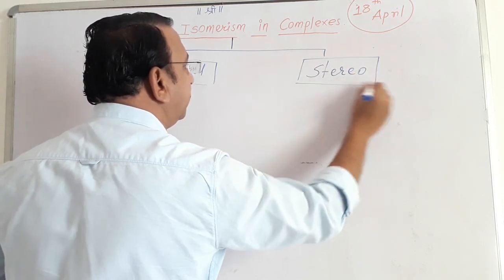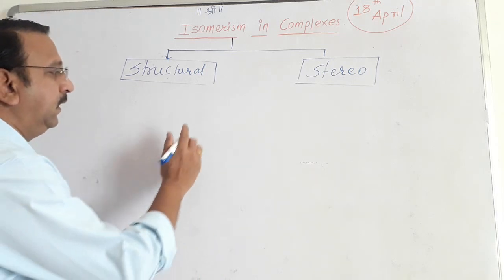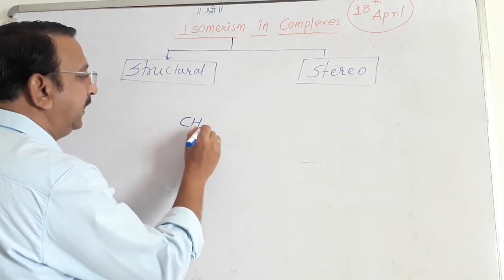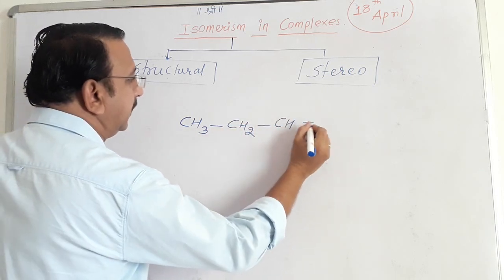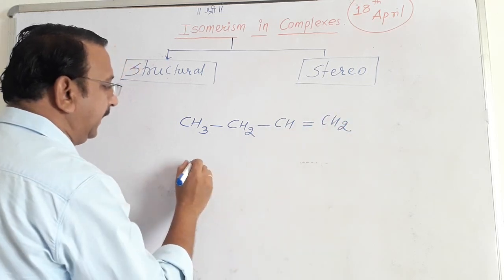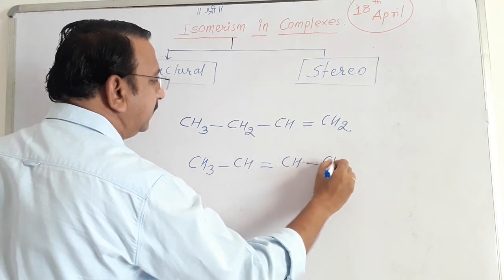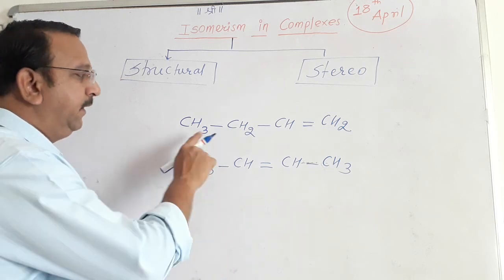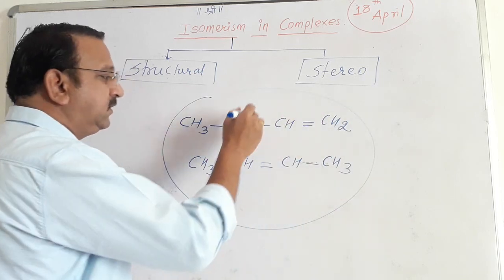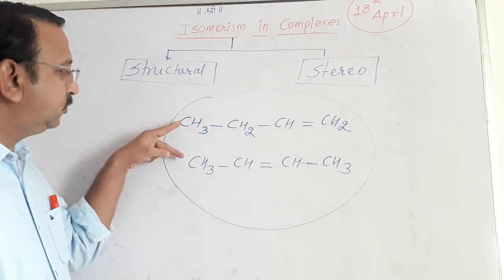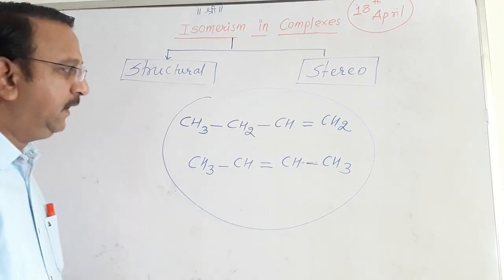You know the basic difference between structural isomerism and stereo isomerism. For example, I take CH3-CH2-CH=CH2 and I take this compound CH3-CH=CH-CH3. Everybody knows this is but-1-ene and this is but-2-ene. Molecular formula is same but structures are different, so these two isomers are structural isomers of one another.